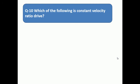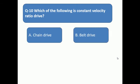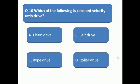Question 10: Which of the following is a constant velocity ratio drive? Which type of drive gives constant velocity ratio? A: chain drive, B: belt drive, C: rope drive, D: roller drive.